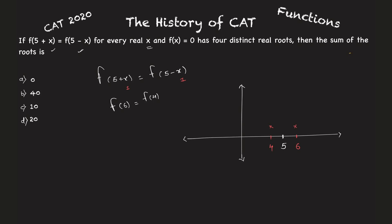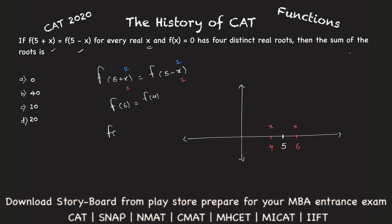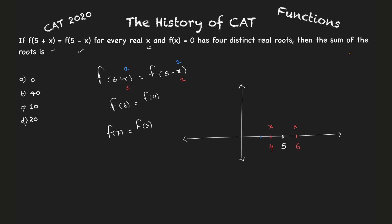And if I take x as two, what will happen then? This will become f(5+2), f(7) equals f(5-2), f(3). Which means what? If I plot it here, this function at three and the function at seven, they are again equal.